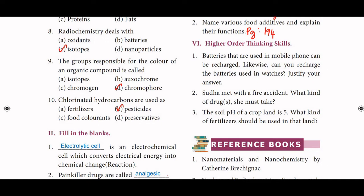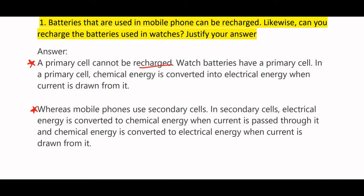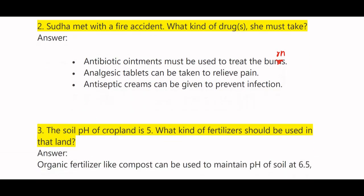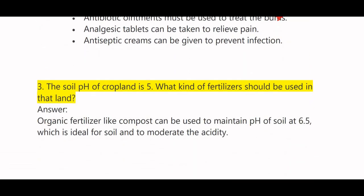Sudha met with a fire accident. What kind of drugs should she take? Antibiotic ointments must be used to treat the burns. Analgesic tablets can be taken to relieve pain. Antiseptic creams can be given to prevent infection. Third HOTS: the soil pH of crop land is 5 — what kind of fertilizers should be used? Organic fertilizers like compost can be used to maintain the pH of soil at 6.5, which is ideal for soil and to moderate the acidity.